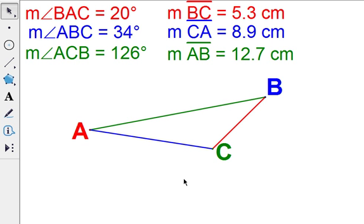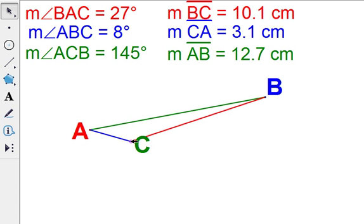So as you see this, and as you move it around, it doesn't matter where it goes, but if you know where the smallest angle is, the smallest side is always opposite. If you know where the biggest angle is, the biggest side is always opposite the biggest angle.